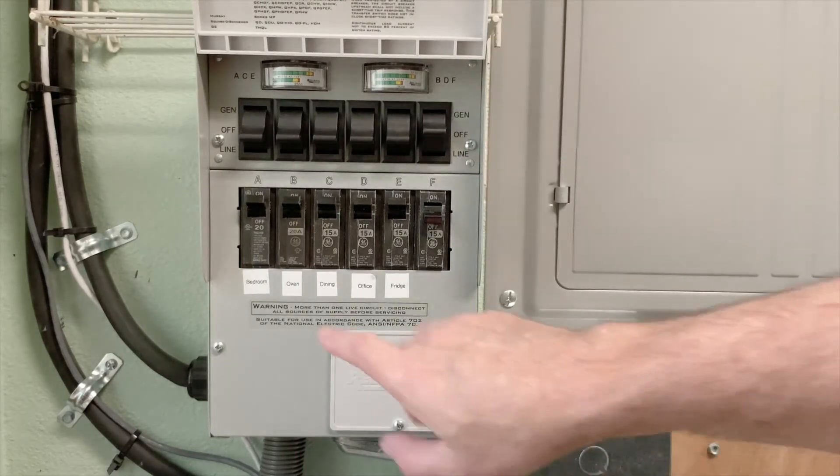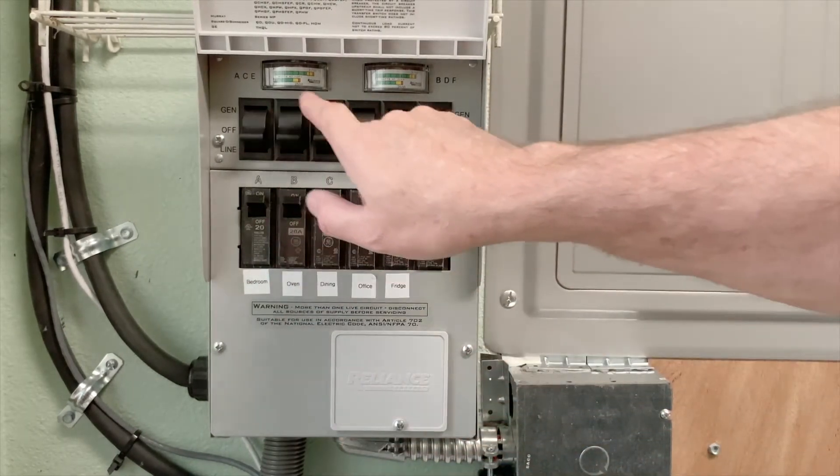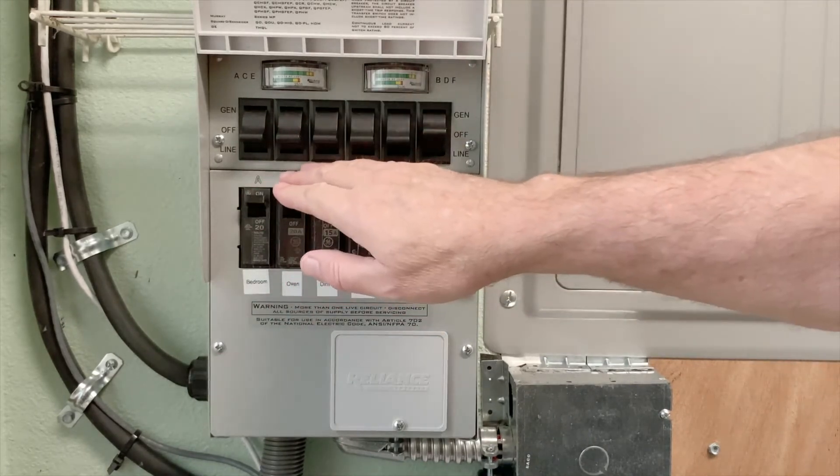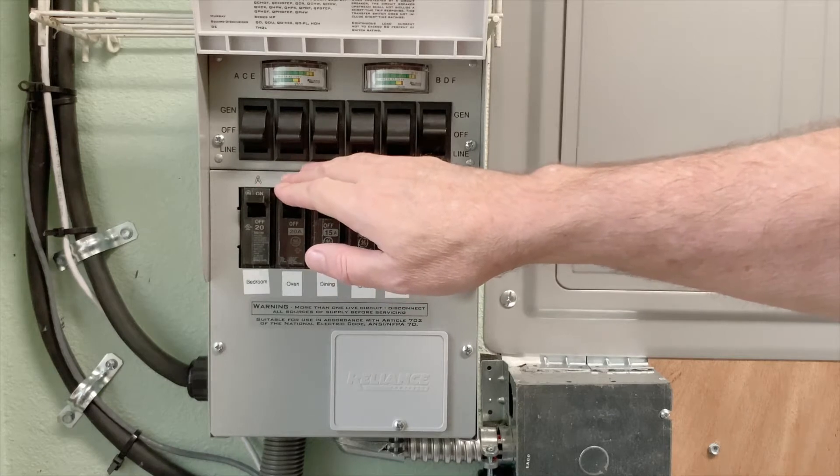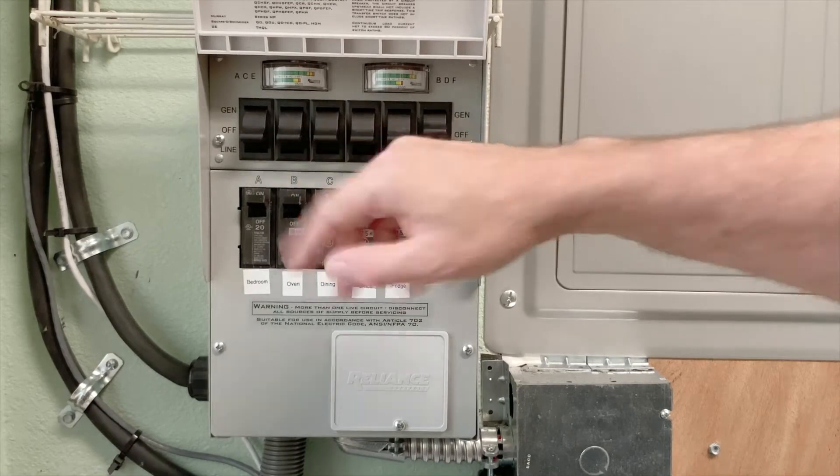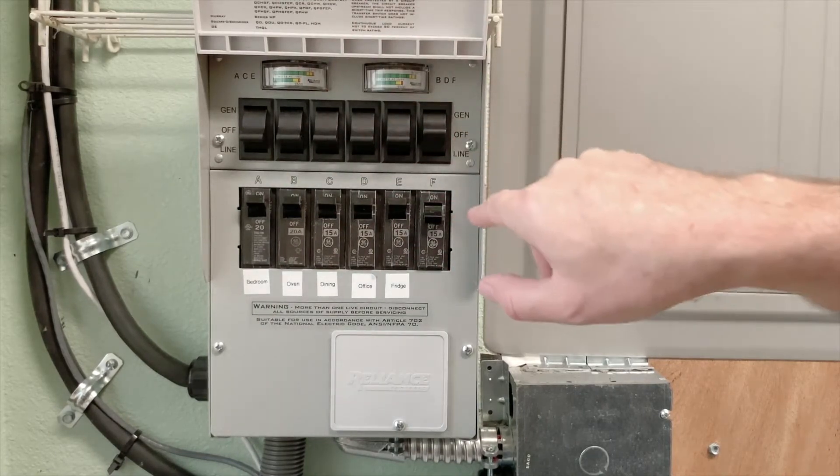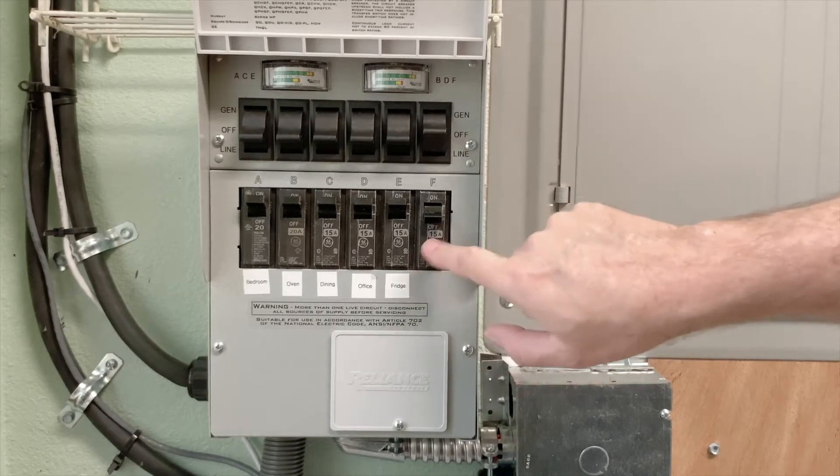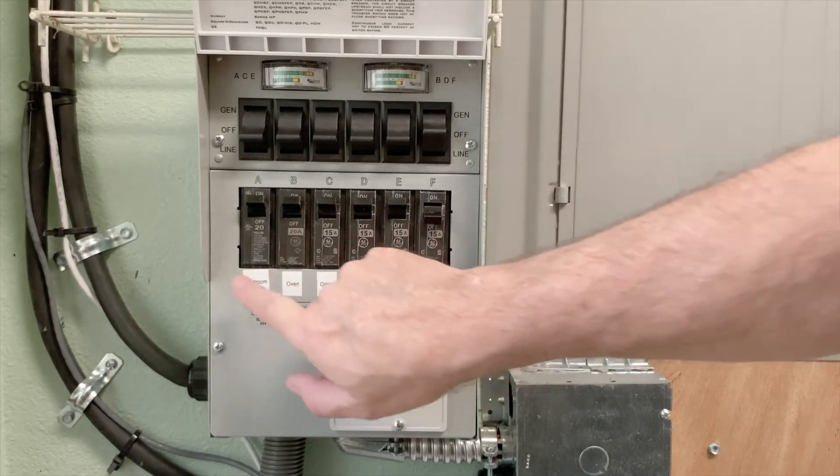This particular unit has six circuits inside: A, B, C, D, E, and F. They also make a larger one that has ten circuits. Now, each circuit has both a rocker switch that selects your power source, as well as a breaker down at the bottom underneath of each A, B, C, and D. There's six breakers that go across.